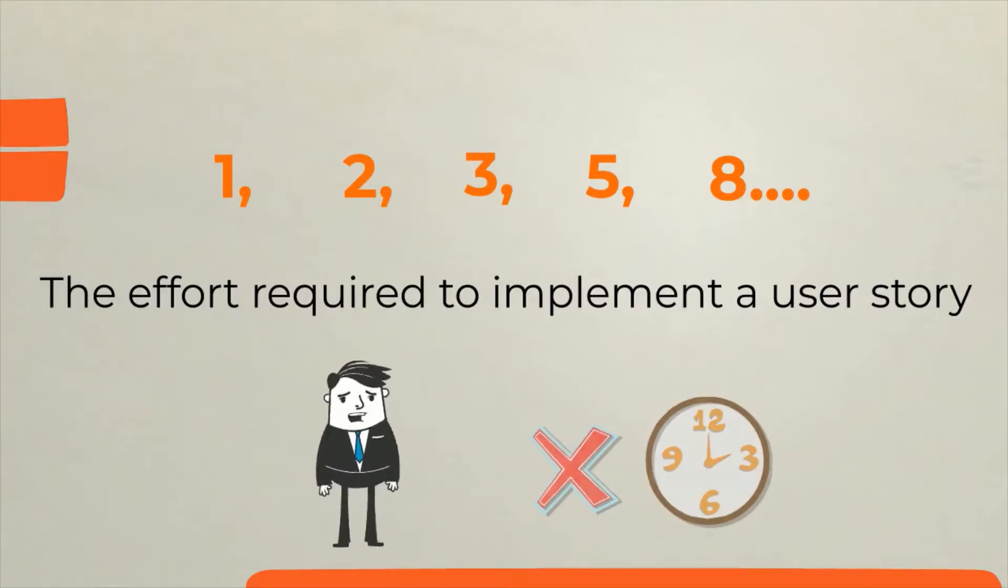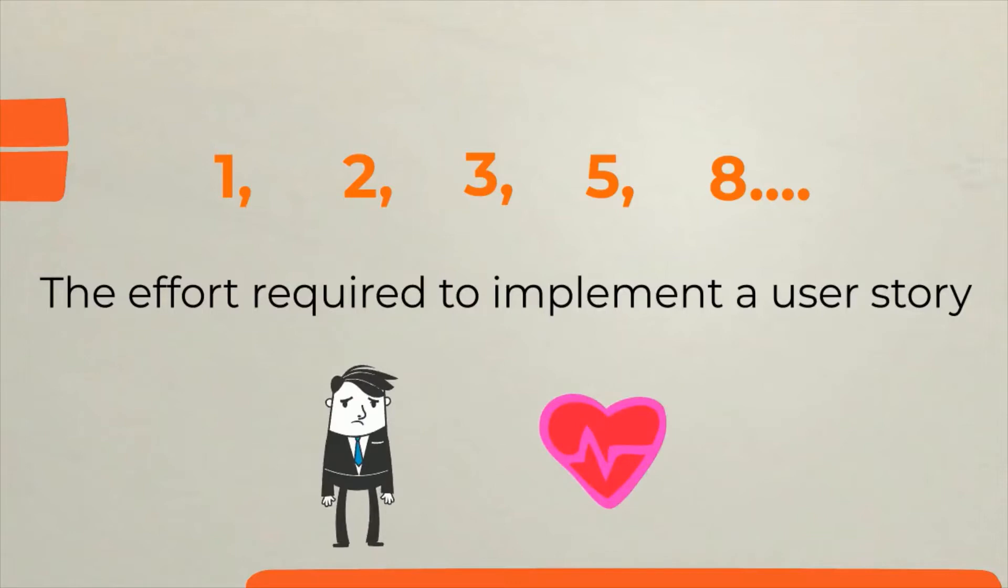This could be frustrating for people as it could turn to a blaming game if we are not able to finish tasks within the time frame agreed on. Story point estimation removes this emotional attachment by removing the link that we can have towards time.